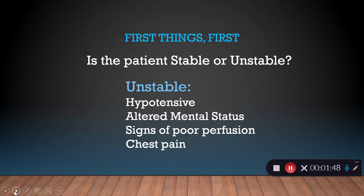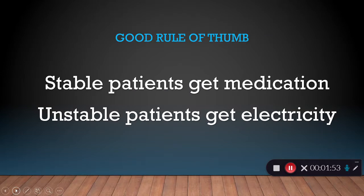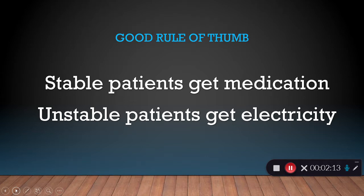So chest pain becomes one of those criteria for an unstable patient. Our rule of thumb: stable patients are going to get medicine, because we have time. If they're unstable, time is their worst enemy, and we want to get them treatment as fast and efficiently as we can — and that's going to be electricity. It takes two seconds to pull out those defib pads, get them on your patient, and we're ready to go.